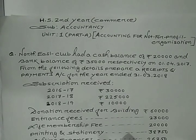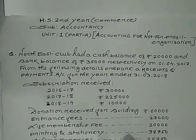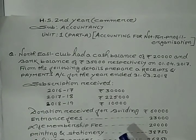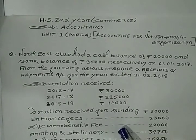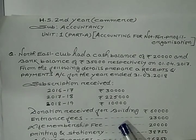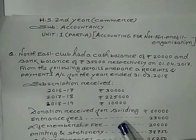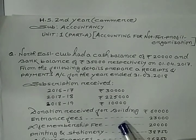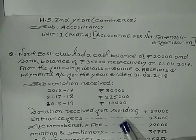Any capital nature items or revenue nature items will also be recorded in Receipt and Payment Account. Either it is revenue receipt, revenue payment, capital receipt, or capital payment — all will be recorded in Receipt and Payment Account. Just remember that no credit transactions are to be recorded in Receipt and Payment Account.